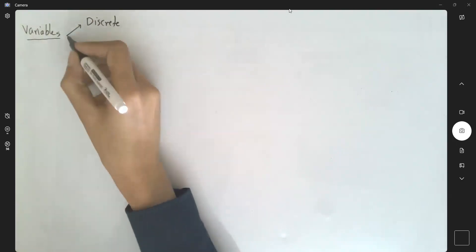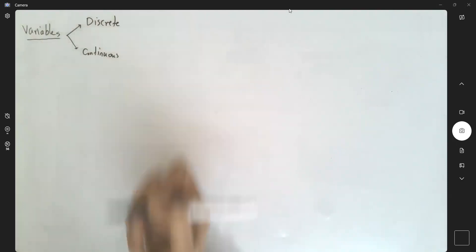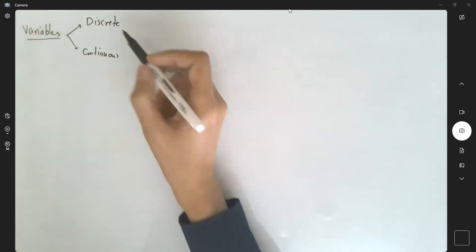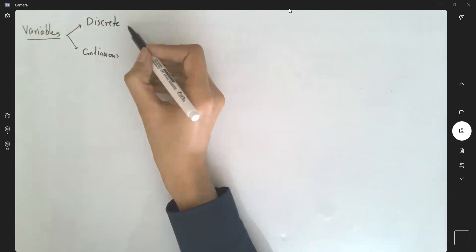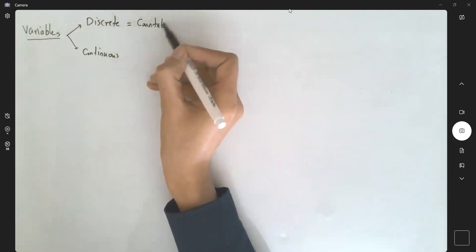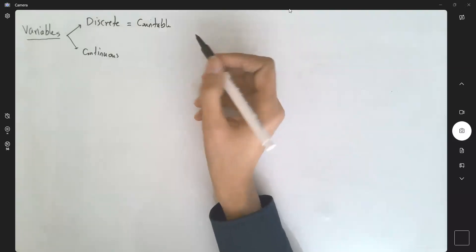you either deal with discrete variables or continuous variables. We say that a variable is discrete if it is countable. Like what? Like the number of students sitting in this class.